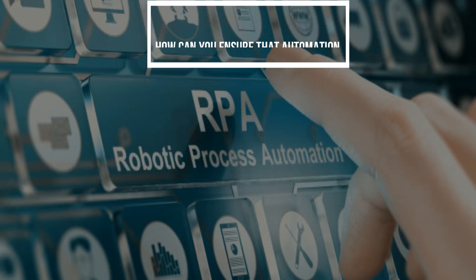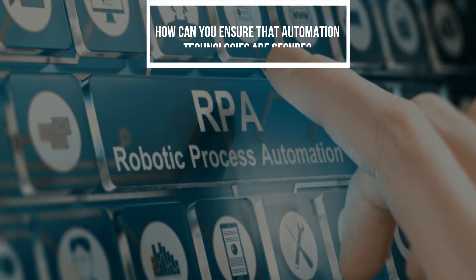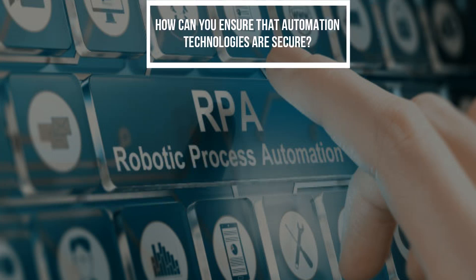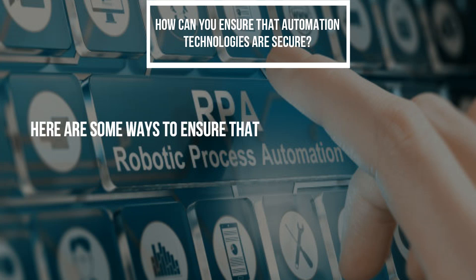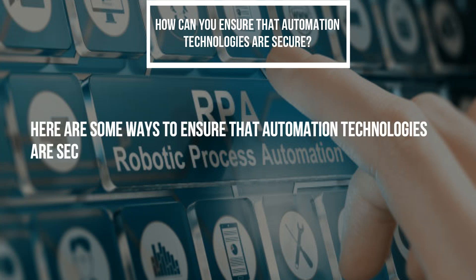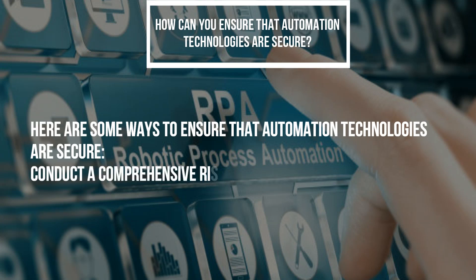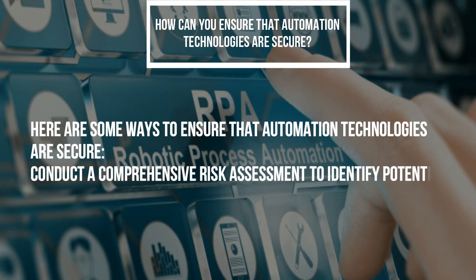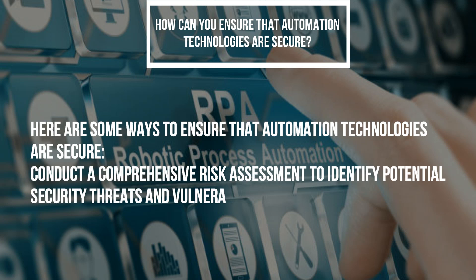How can you ensure that automation technologies are secure? Here are some ways to ensure that automation technologies are secure. Conduct a comprehensive risk assessment to identify potential security threats and vulnerabilities.